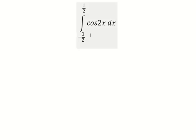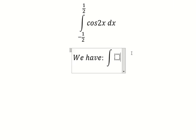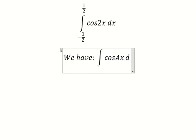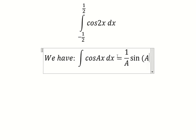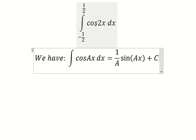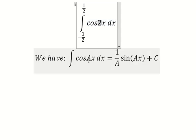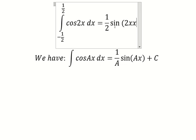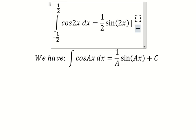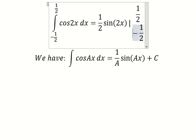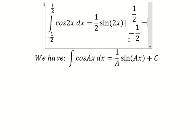Hello everybody. Today I want to show you how to answer. We have the formula in here. Now we apply this one — number two, that is about capital A. So this one we have one over two sine 2x, and then we put the bounds from negative one over two to positive one over two. So we put this number in here.